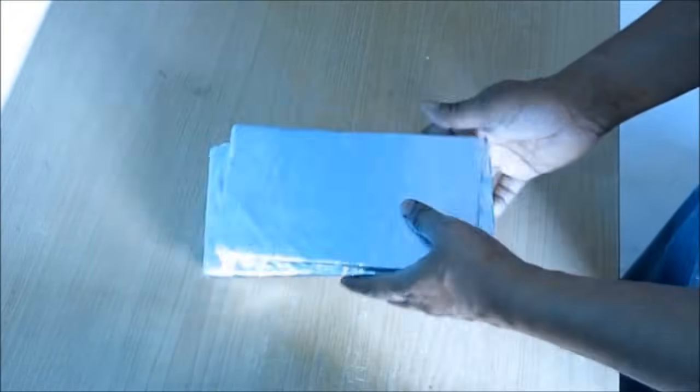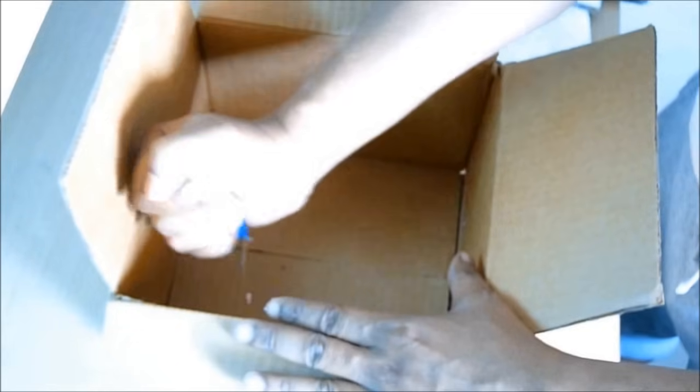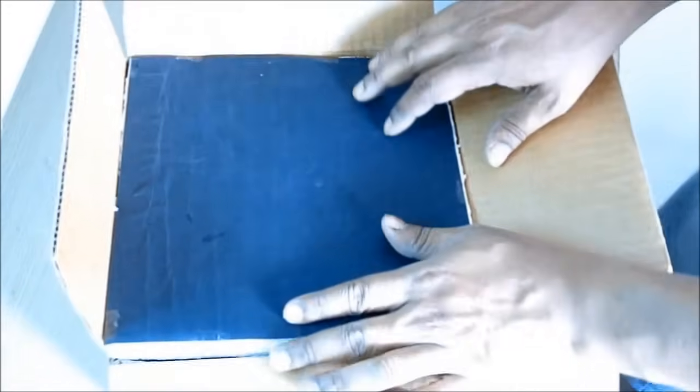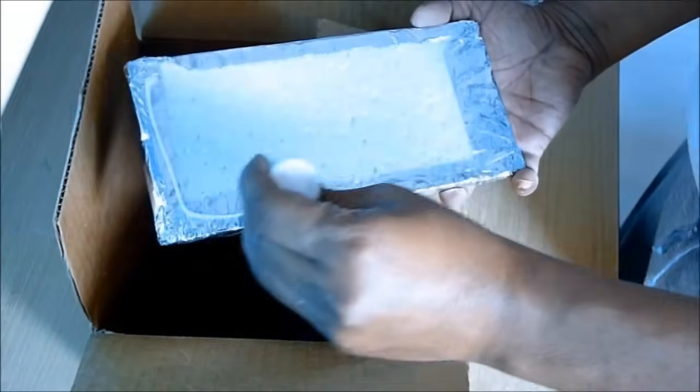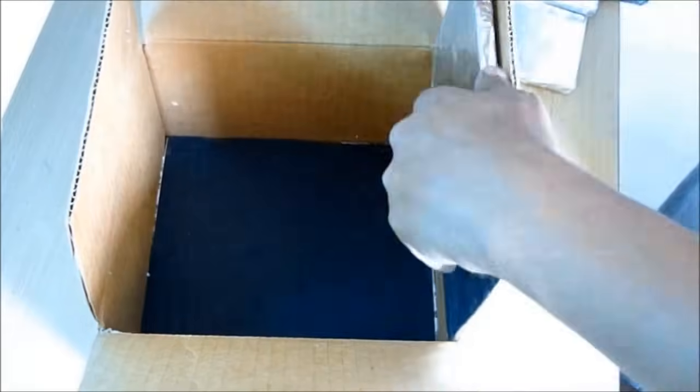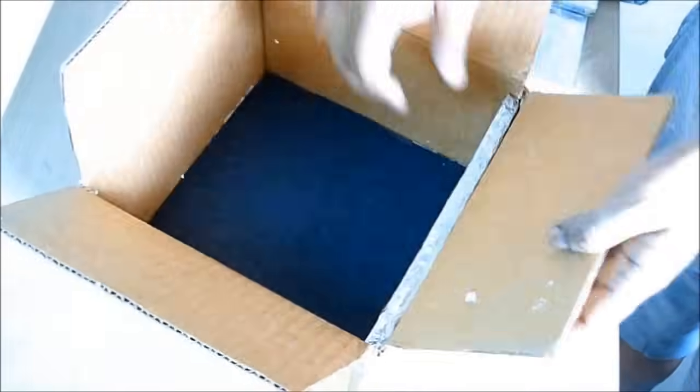Thus I make total four walls. Now put glue on the base of the box and put this thermocon into it. Then glue all the four thermocon walls on all four sides like this.